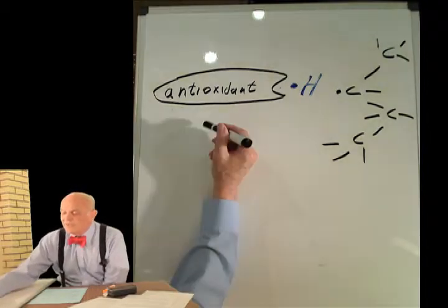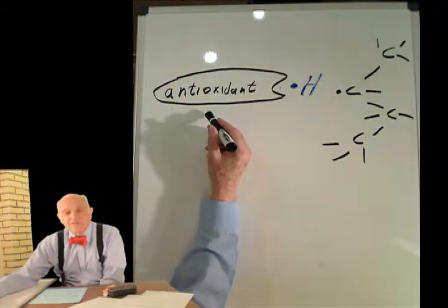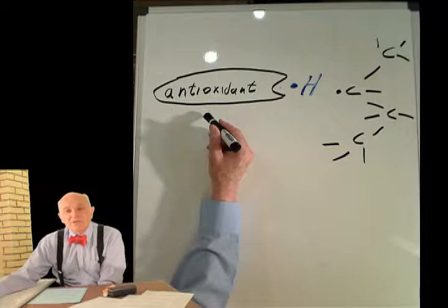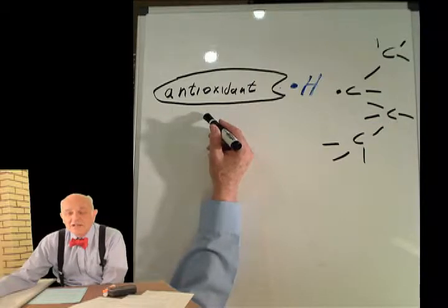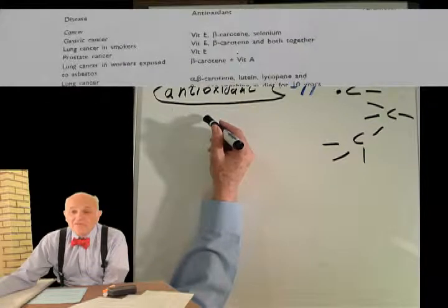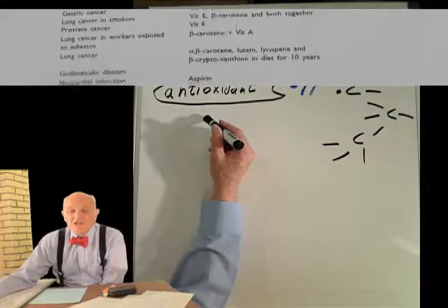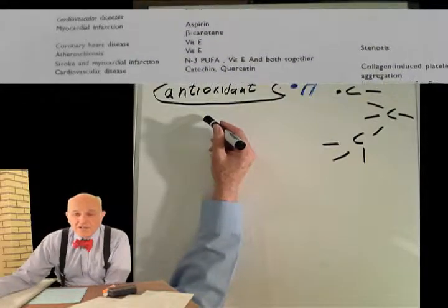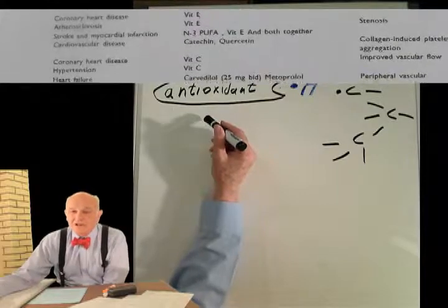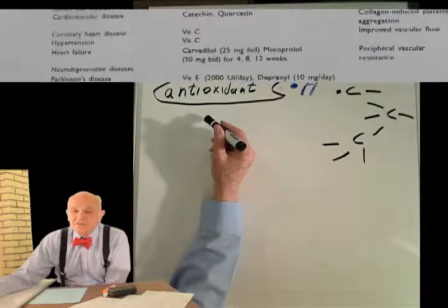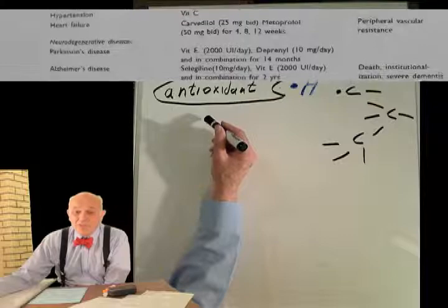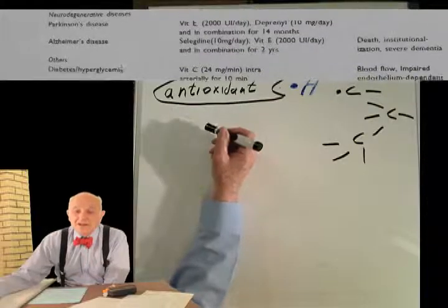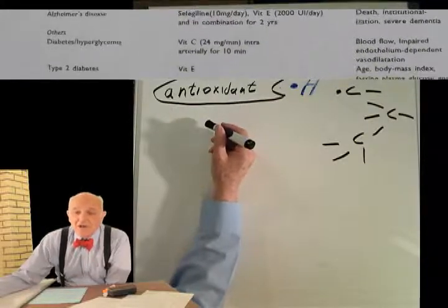So this is an example of an antioxidant, kind of a representation. This could be a vitamin C, vitamin A, one of the many vitamin E's. There's a very large number of antioxidants and they take on a lot of different characteristics and behave in a lot of different ways. But the general pattern is that the antioxidant gives up a free radical.